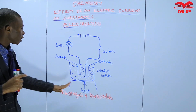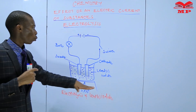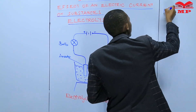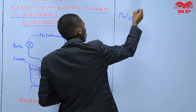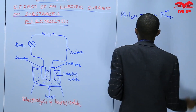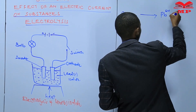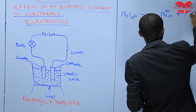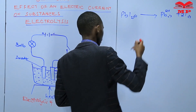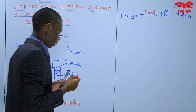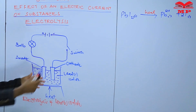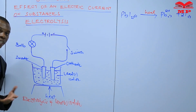When you heat lead(II) iodide first, the solid will melt and become a liquid. That melt will have lead ions in liquid state and iodide ions also in liquid state. When you heat lead(II) iodide, you get lead ions and iodide ions. Those ions are now able to conduct electric current.